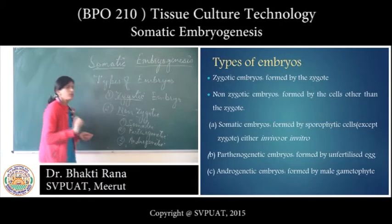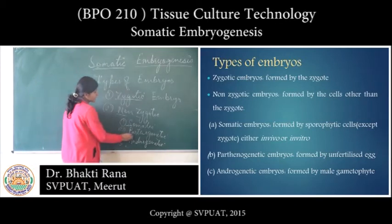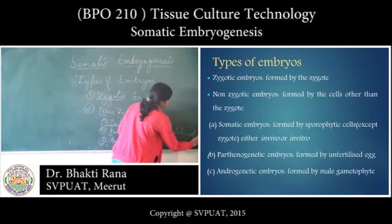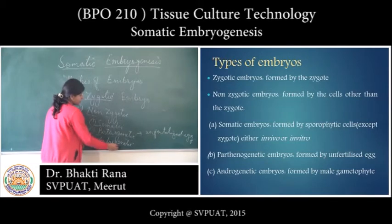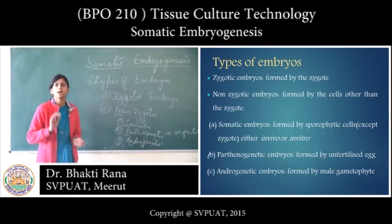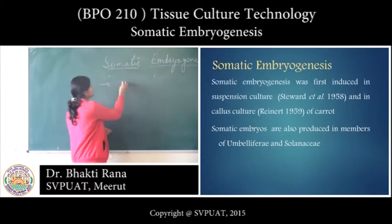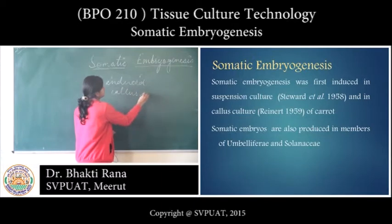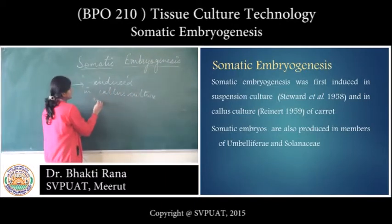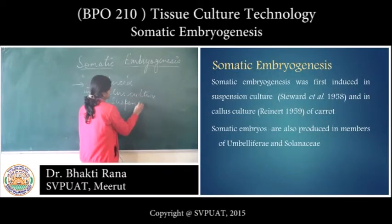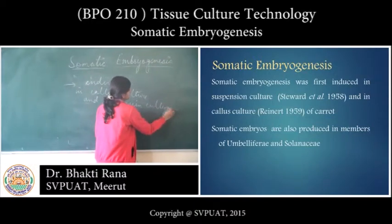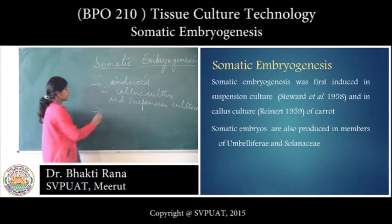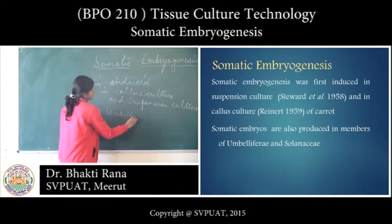Somatic embryos are produced from somatic cells. Parthenogenetic embryos are produced from unfertilized eggs. Androgenetic embryos are produced from other parts of the cell. Somatic embryogenesis was first induced in callus culture and suspension culture of carrot, and it can also be produced in members of Umbelliferae and Solanaceae.